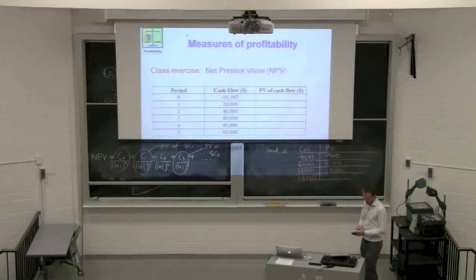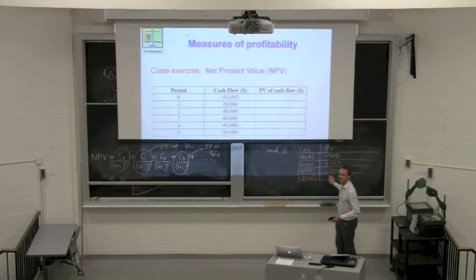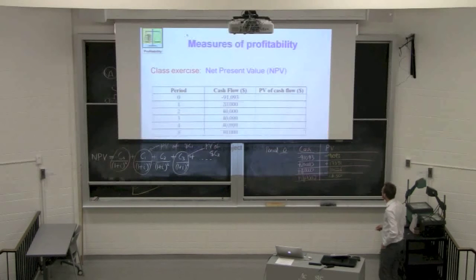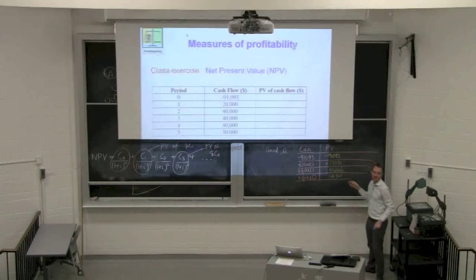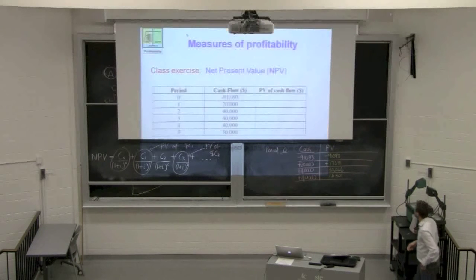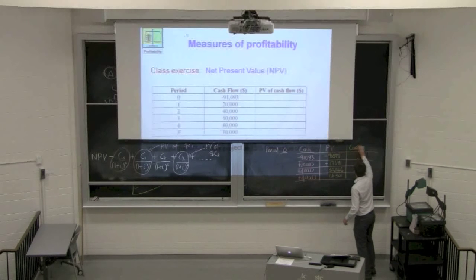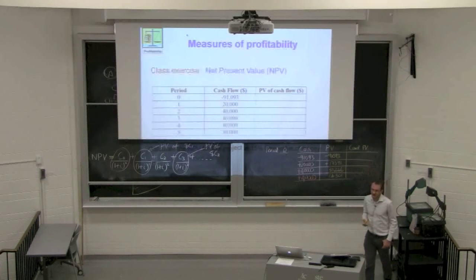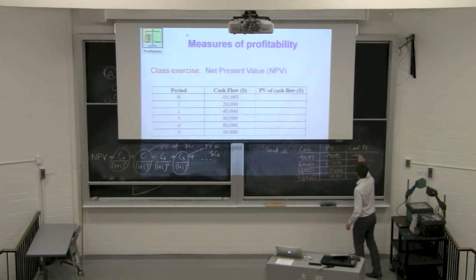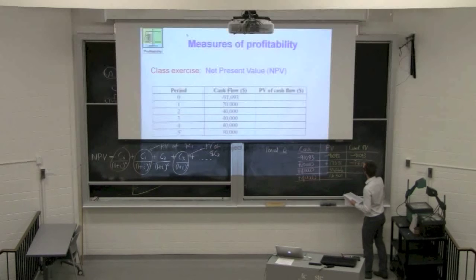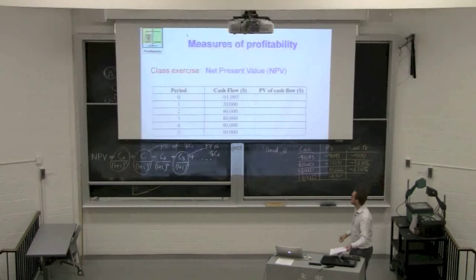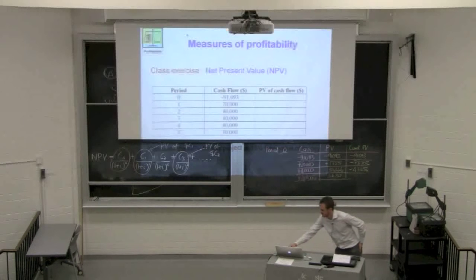Continuing: the next $40,000 cash flow gives $26,301. Notice these two cash flows are both $40,000, but in the subsequent year it's worth less money. You can then calculate the cumulative present values: −$91,000, then −$73,702, then −$43,456, and so on. The full answers are in the next slide — you don't need to copy this down, the spreadsheet is on the website where you can click on cells and see the formulas underneath.